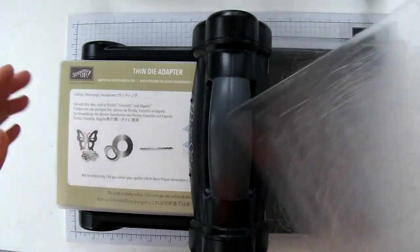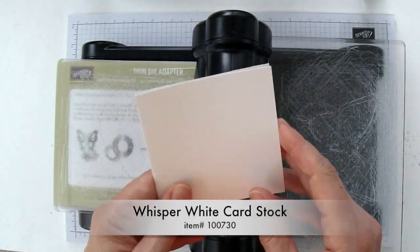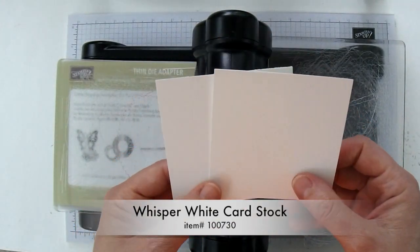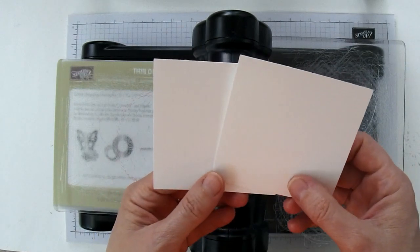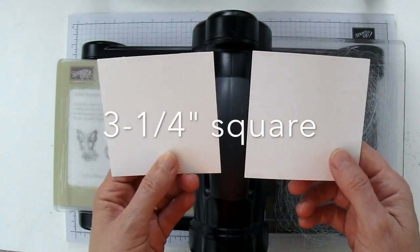And then you're going to put one of the cutting plates down. Then you're going to need some Whisper White cardstock. This is our regular Whisper White cardstock, not the thick cardstock. And I've cut each of these pieces to a three and a quarter inch square.